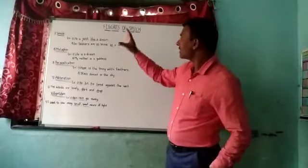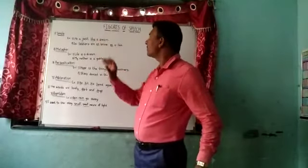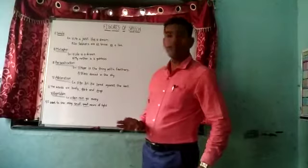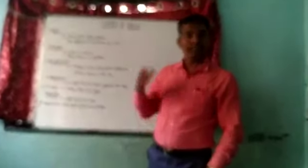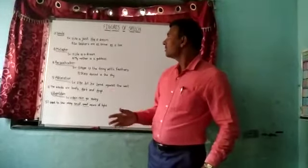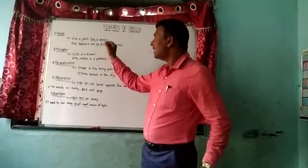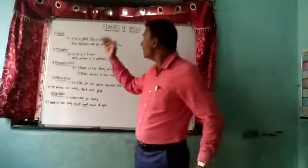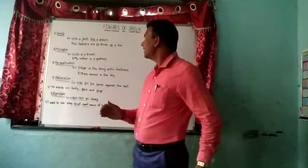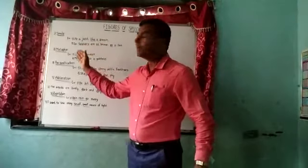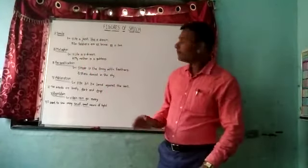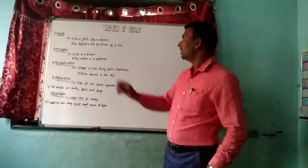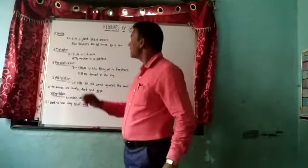The first type of figure of speech is simile. First we should know what simile is. Simile means where in a sentence there is a comparison between two different objects. Simile is used in the figure of speech. There are two examples of simile.